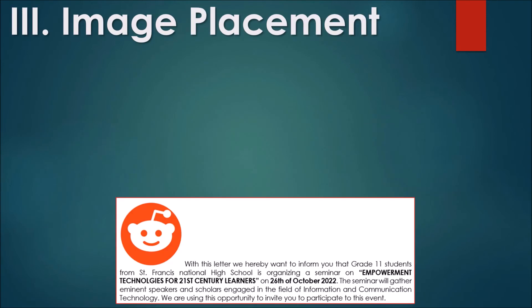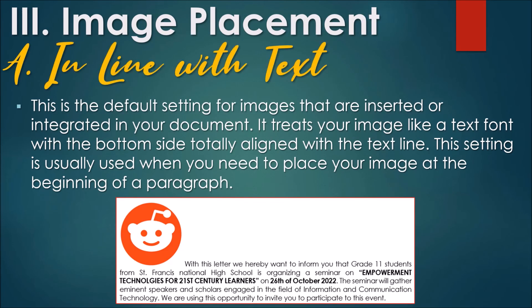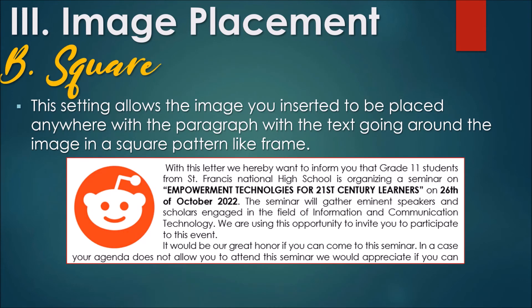Image Placement. A. In Line with Text — This is the default setting for images that are inserted or integrated in your document. It treats your image like a text font with the bottom side totally aligned with the text line. This setting is usually used when you need to place your image at the beginning of a paragraph. B. Square — This setting allows the image you inserted to be placed anywhere within the paragraph, with the text going around the image in a square pattern like a frame.